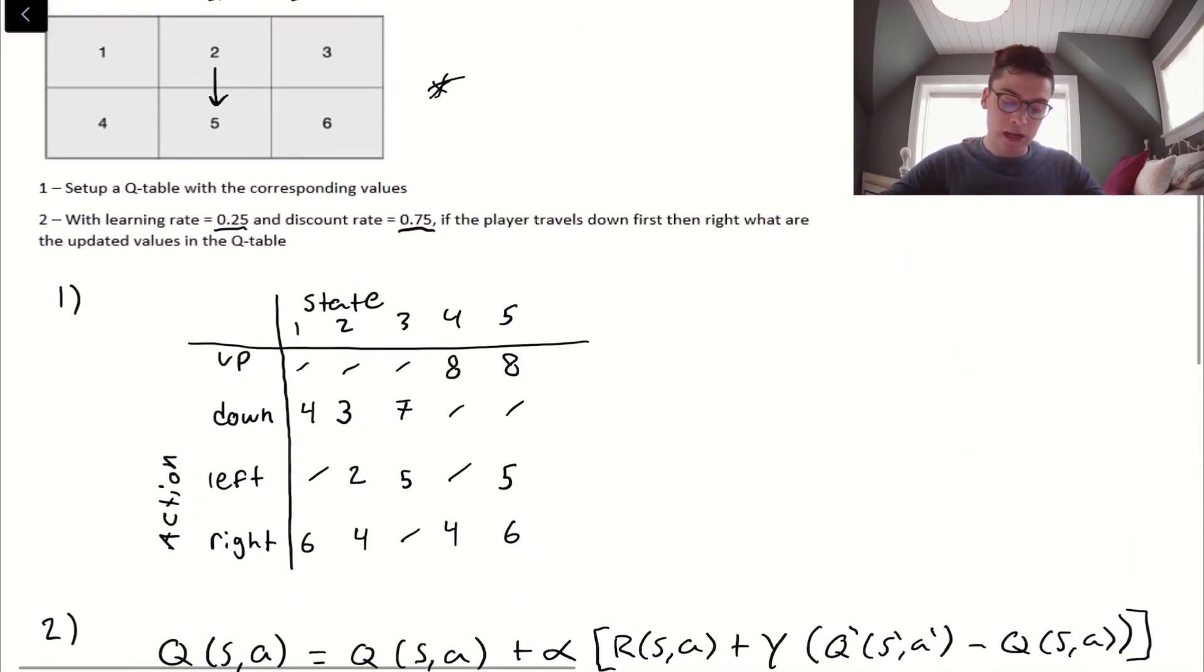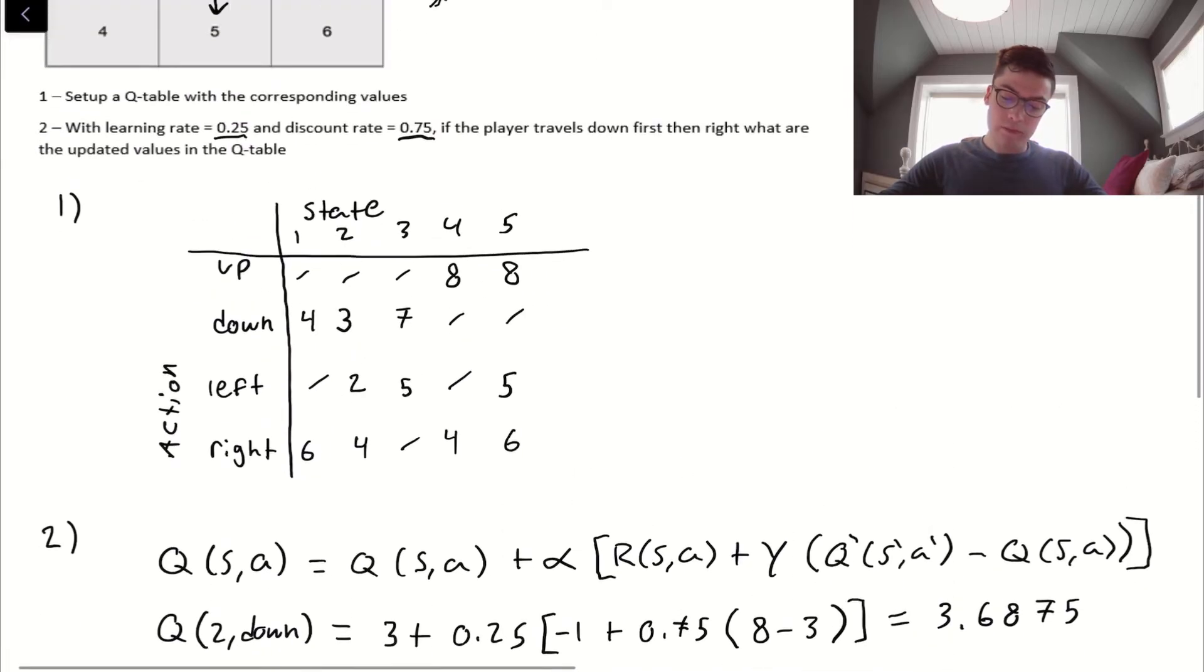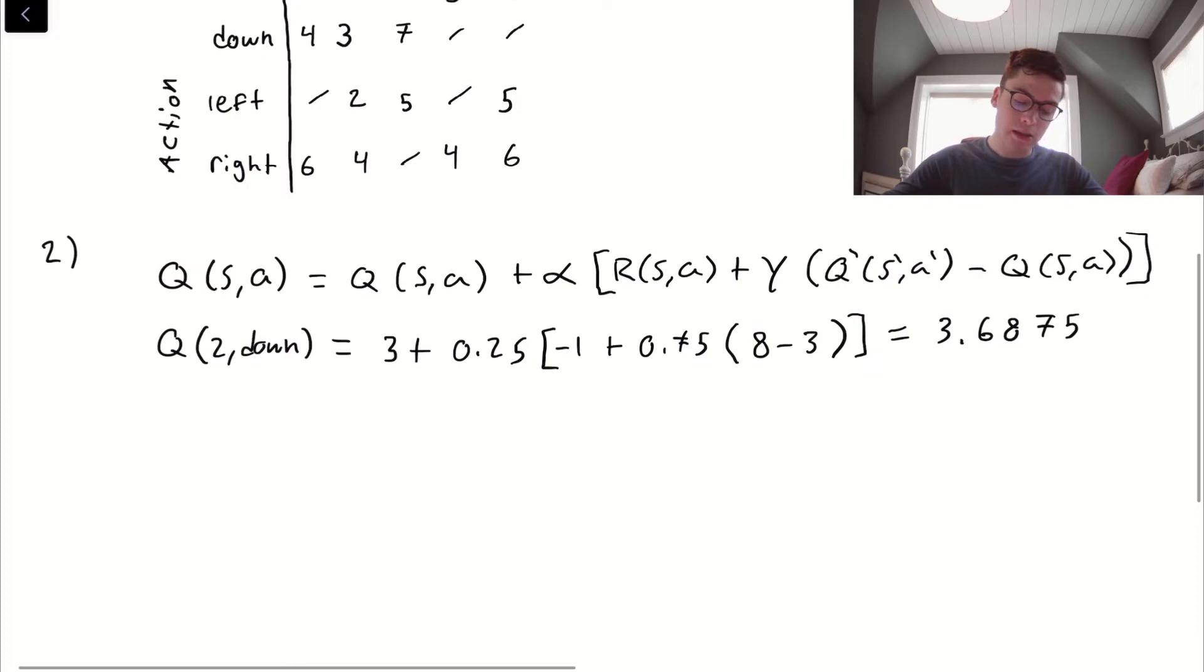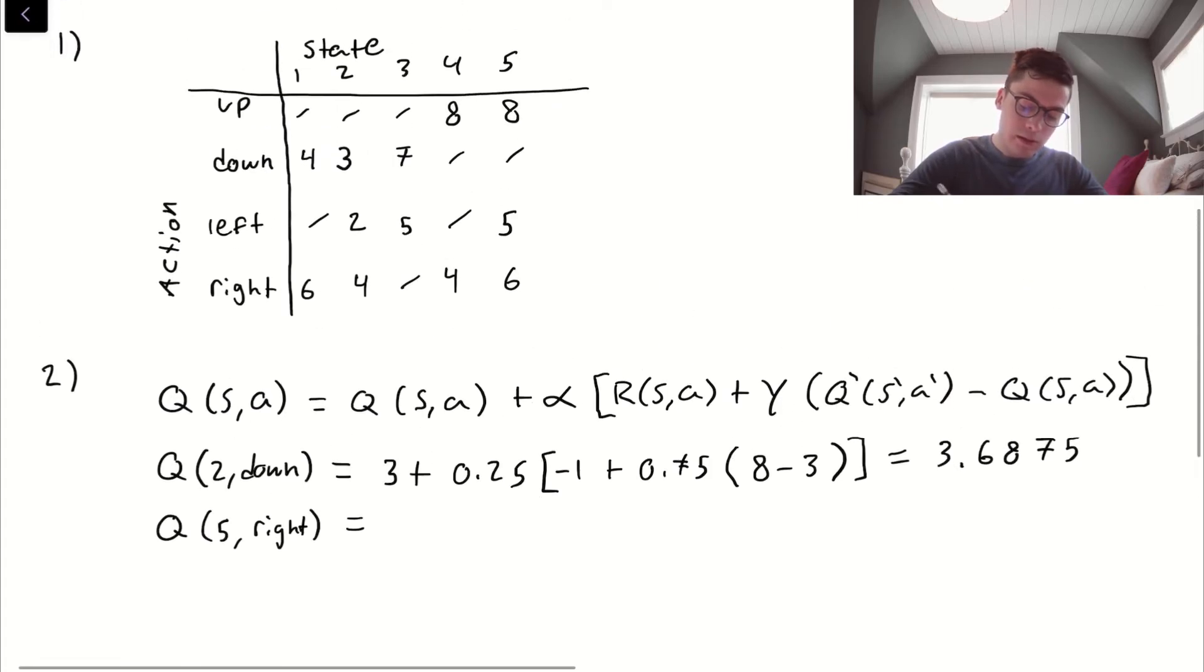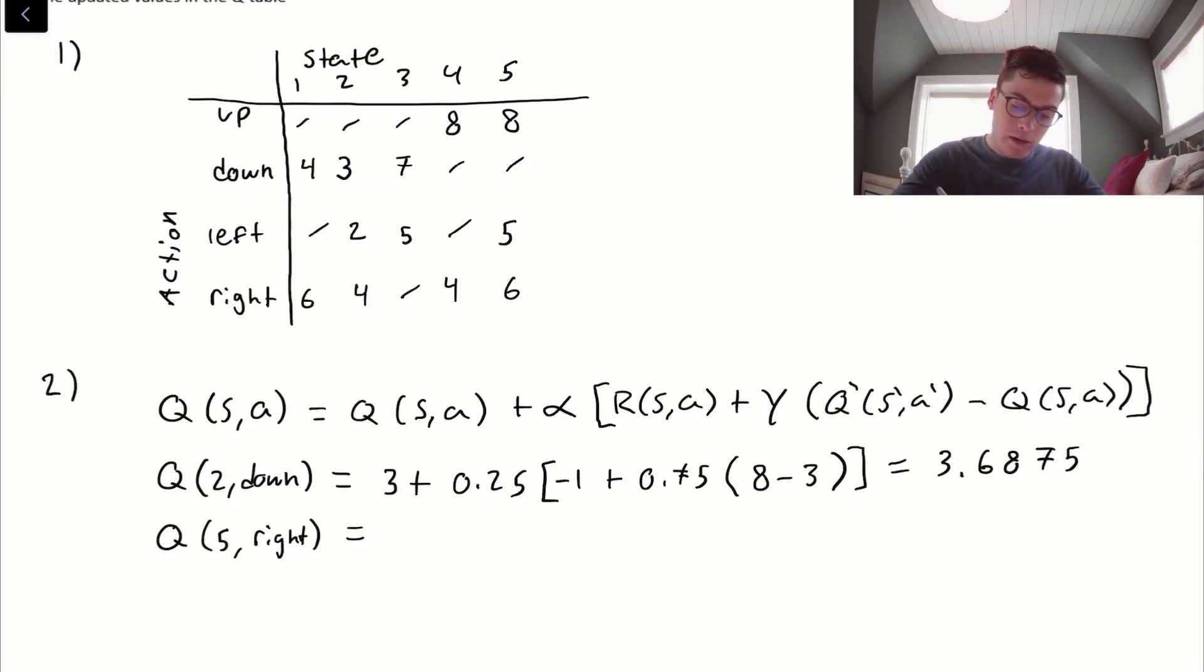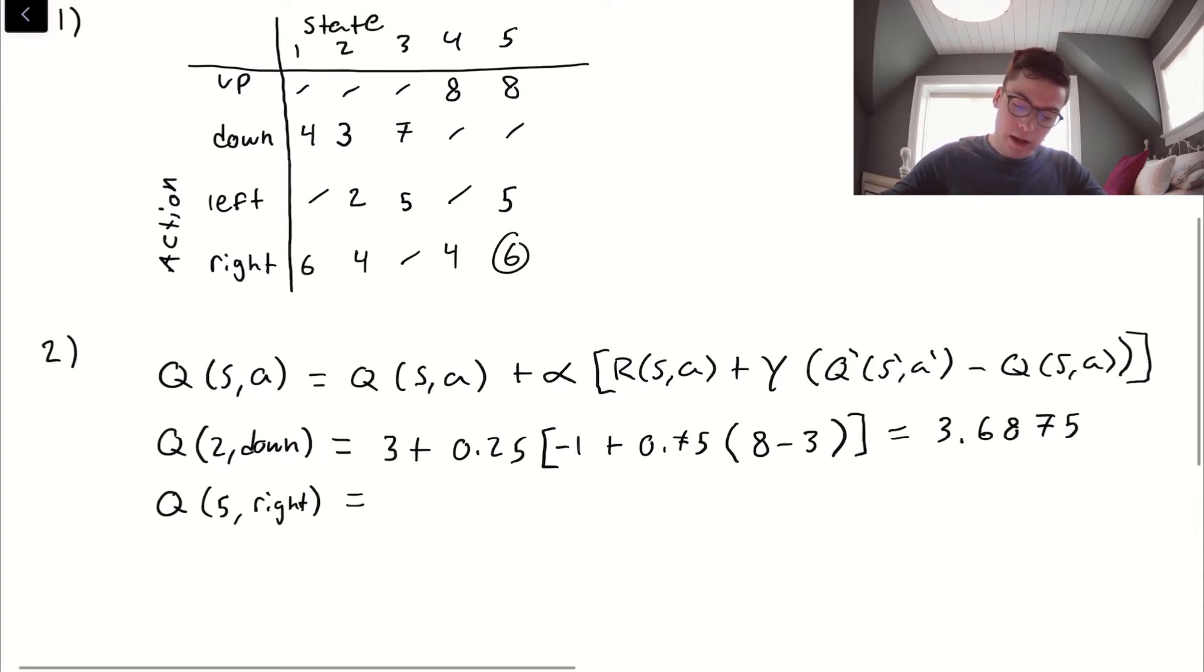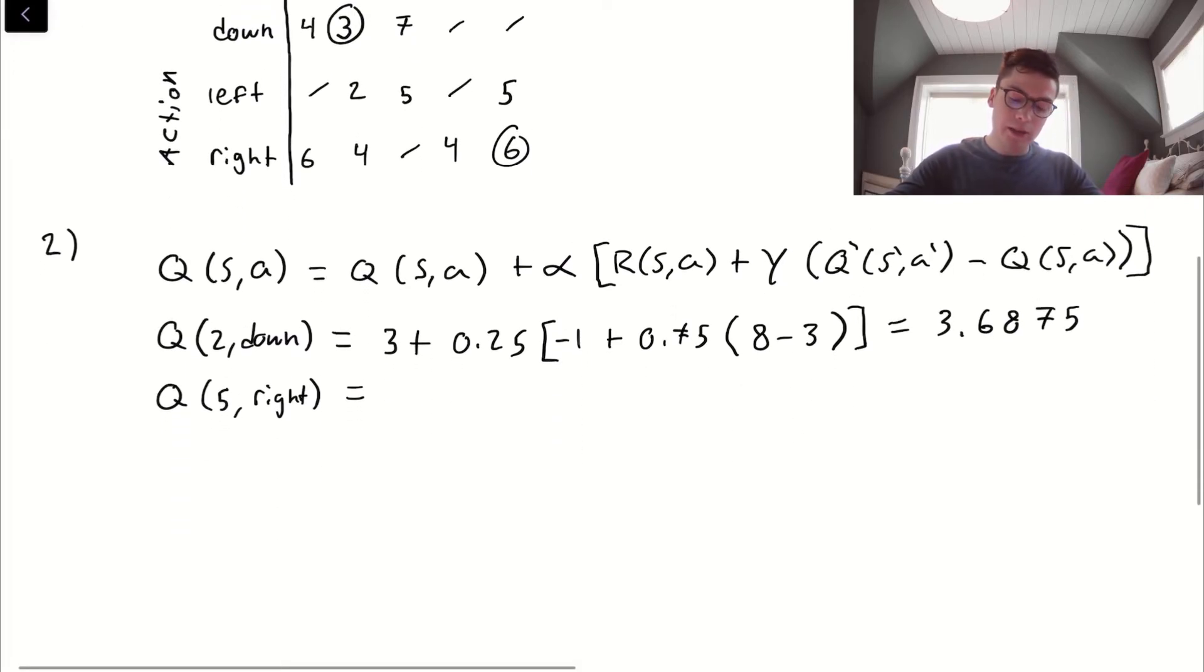Now we have one more to go, and that's right. We're going to go from 5, so since we're currently at 5 now, we're going to go 5 right. That's going to get us to 6. 5 right, we're going to compute this one. Q of 5 right is, we look at our Q table, 5 right, that gives us 6. So, 6 plus the learning rate, and the reward is going to change because we're reaching the end goal state, which is 6. So that's going to be a reward of 10.